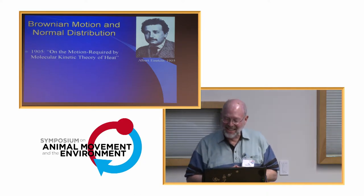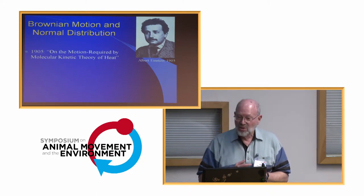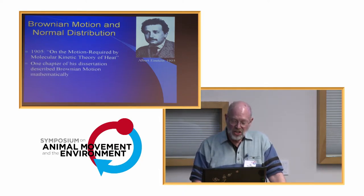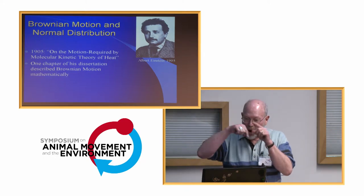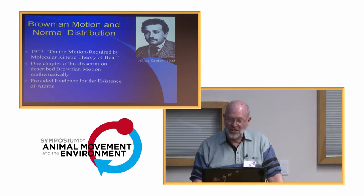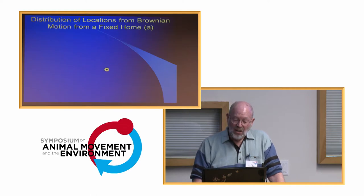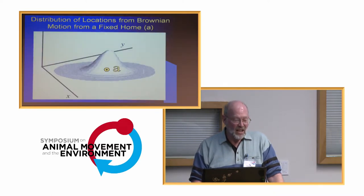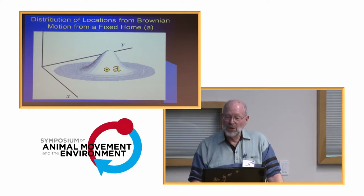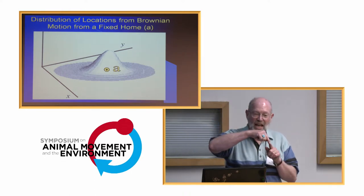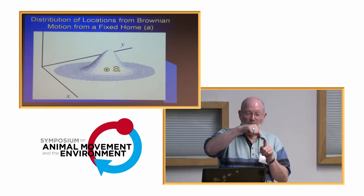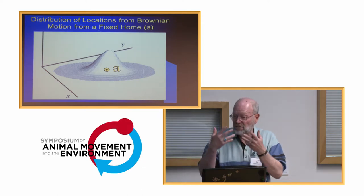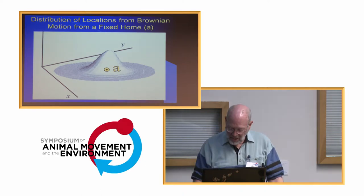In 1905, Einstein's dissertation was published on the motion required by molecular kinetic theory of heat. One chapter described Brownian motion — the random movement of particles — as part of the proof of the existence of atoms. If we start at a fixed point and animals move at random out from that, we can use Einstein's formulas to predict the probability of use over time. If they start at point A, randomly move and come back over and over again, the distribution we get is a circular normal distribution.